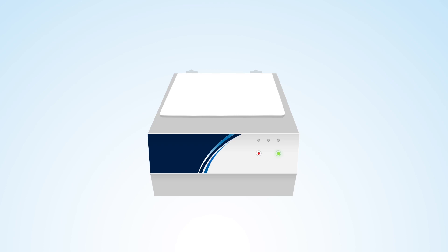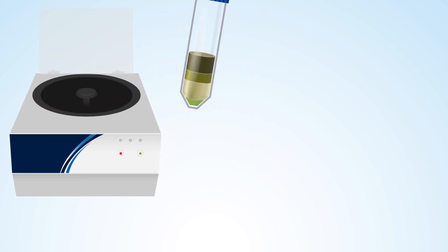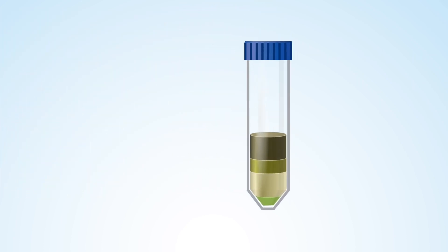After the sample has spun down, take a look at your sample. You should see four distinct layers. From the top down, there's the supernatant, the sample solids, water, and excess extraction salt.